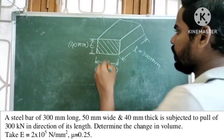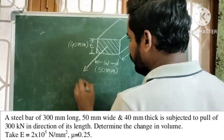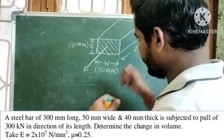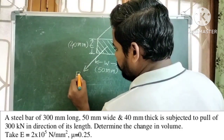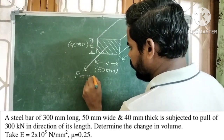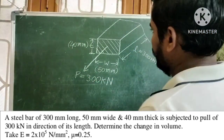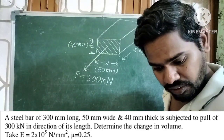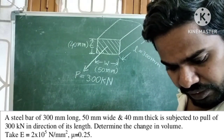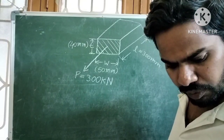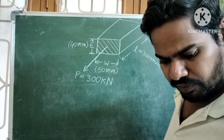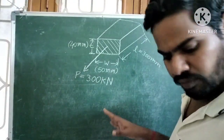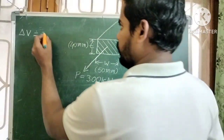The steel bar is subjected to axial pull, so the load is applied in the axial direction along the length. The axial pull P is equal to 300 kilo Newton. Due to this axial pull, the length of the rectangular bar increases. Here we need to find the change in volume.